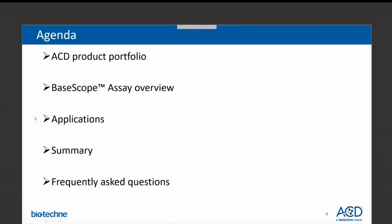In the agenda for today, I'll first introduce you to our product portfolio for a wide range of applications. Then we'll focus on the BaseScope assay that enables detection of splice variants, short targets, and permutations. After that, my colleague Anishka will present on common applications that necessitate the use of the BaseScope assay, along with widely adopted publication data. At the end, we'll summarize our presentation and address frequently asked questions and live questions as well.